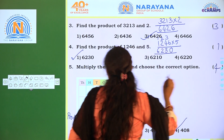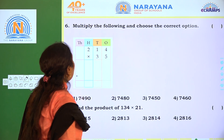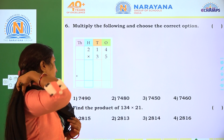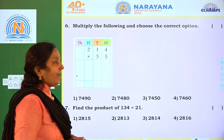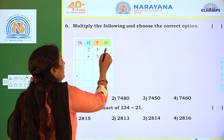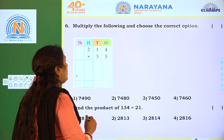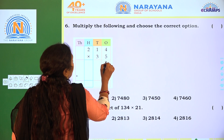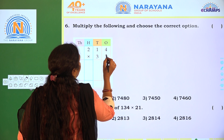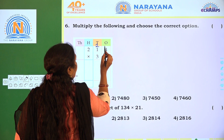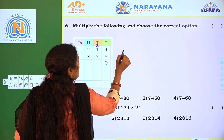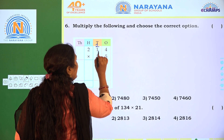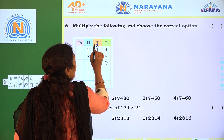Next one: multiply the following and choose the correct option. 240 into 35. Multiply 5 into 240 first: 5 0's are 0 — write 0, 2 regrouping. 5 4's are 20 — write 0, 2 regrouping.